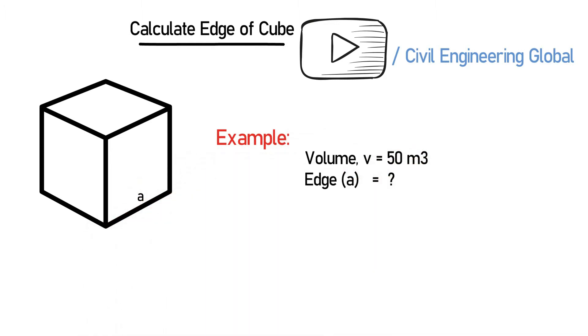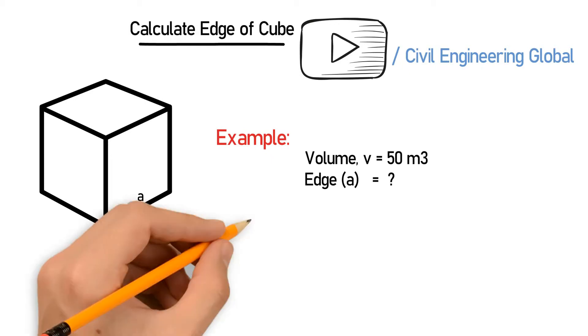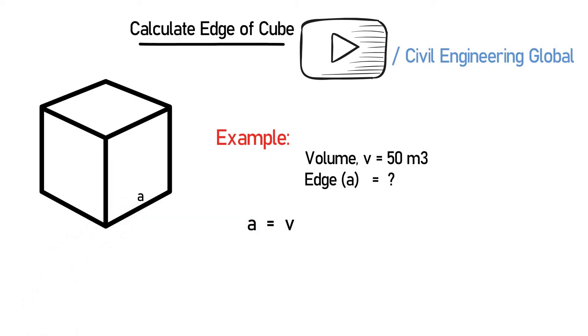So for a, we have the formula v to the 3 divided by 4. So a will be equal to 50 raised to the power 3 divided by 4. So after calculating this, you will get a = 3.684. So this is the method in which you can calculate the edge of a cube.